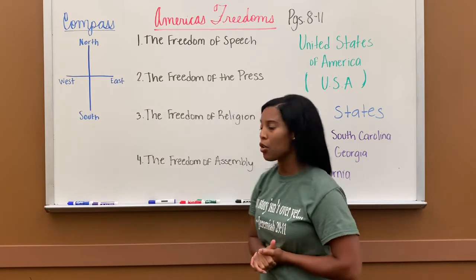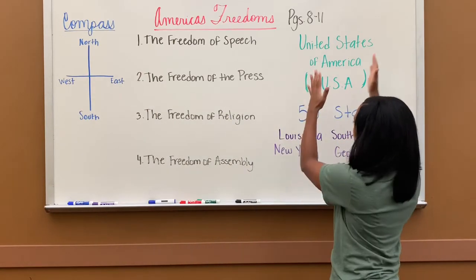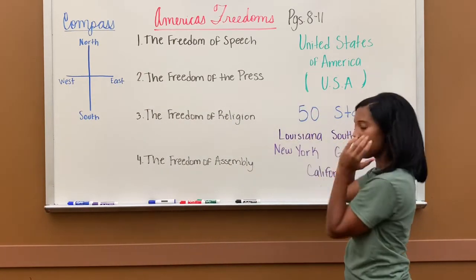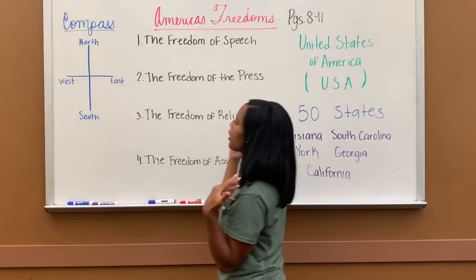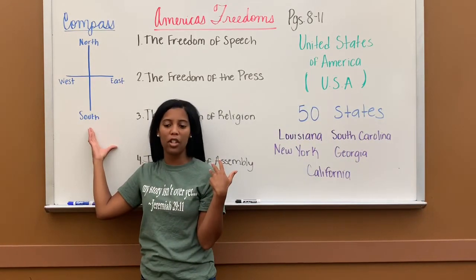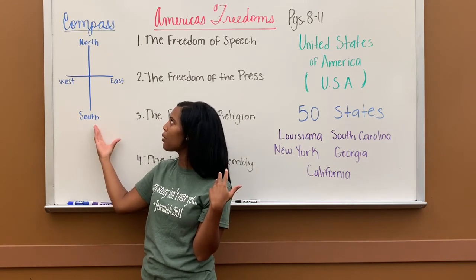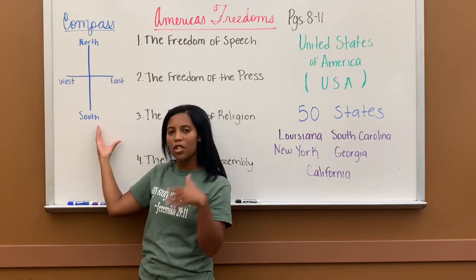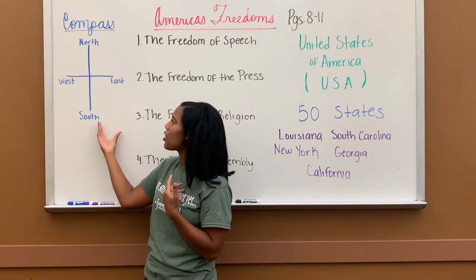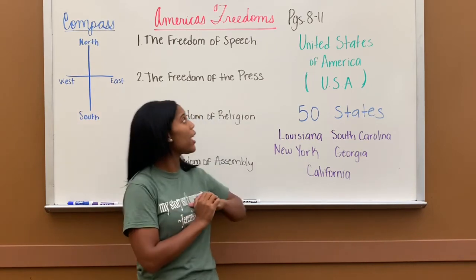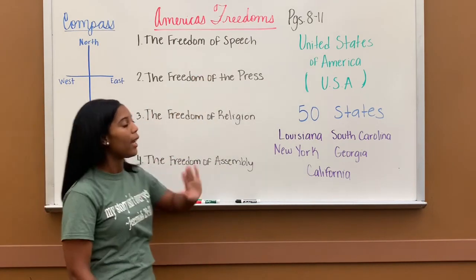That's our social studies lesson today. We learned about the freedoms, reviewed our country, our state, and our city, and also learned the compass which helps us with direction. This was actually a review because you should already be familiar with the compass — this is just a refresher to help you remember the four directions. You can read pages 8 through 11 today, and that's it.